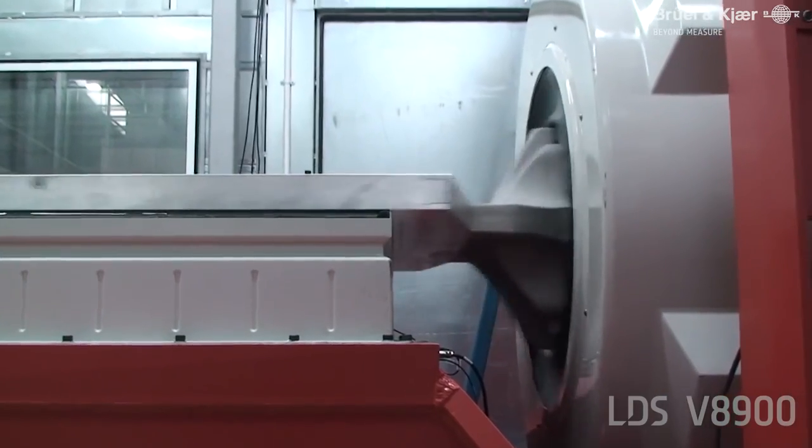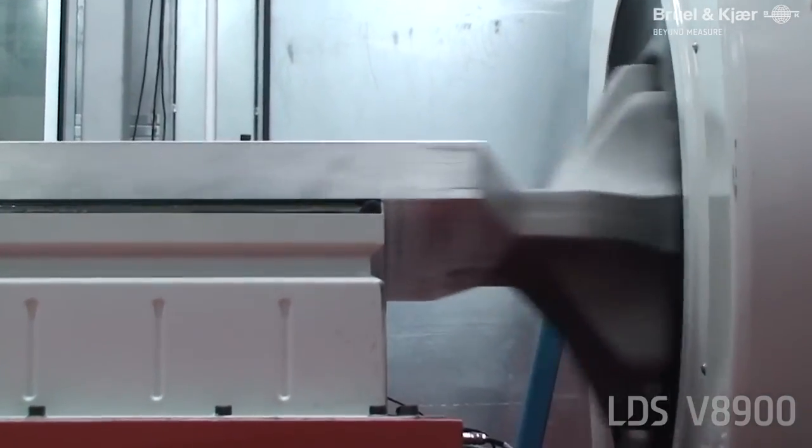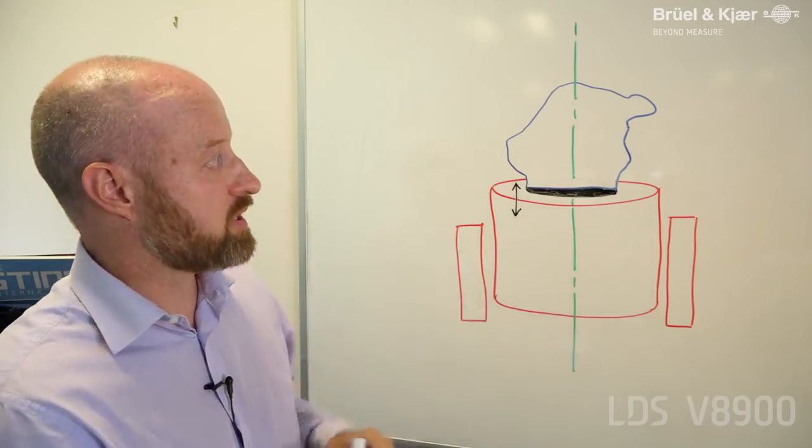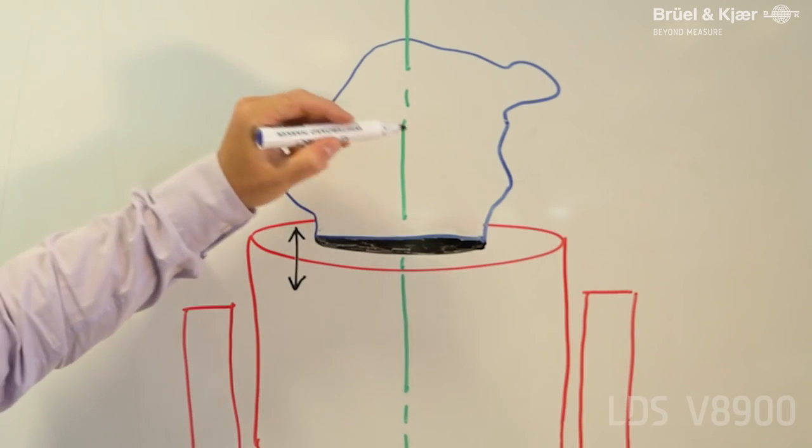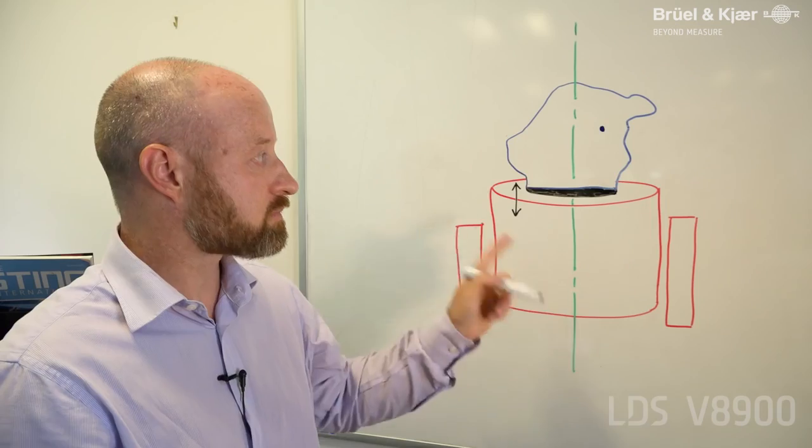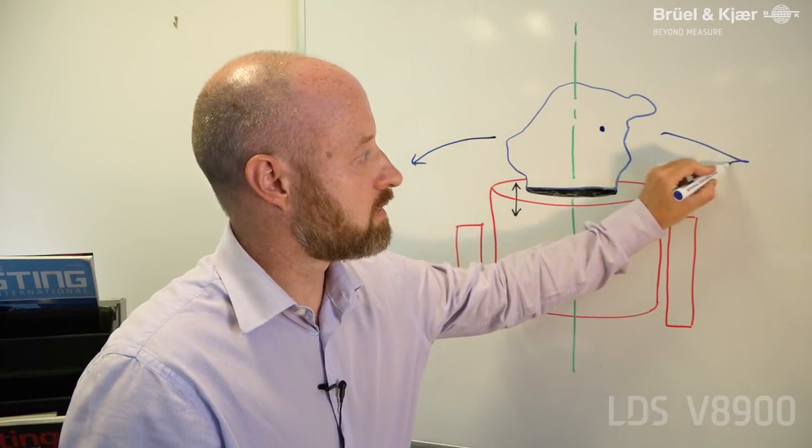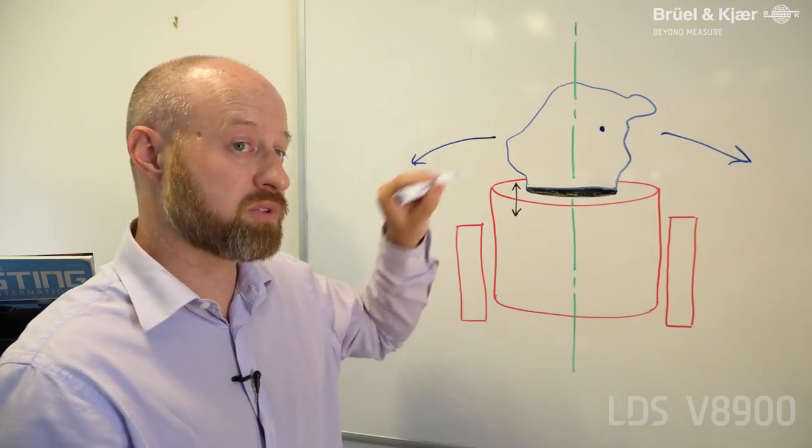The V8900 has a 3 kilonewton meter overturning moment. The reason for that, as you can see from this payload here, is that the center of gravity of the payload is not always over the center of the shaker. As a result, overturning moments can arise from left to right and also in the other axis.